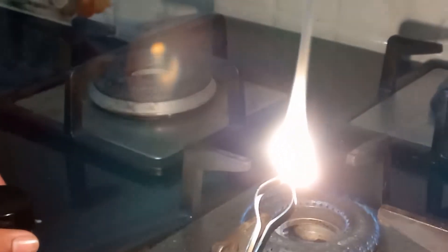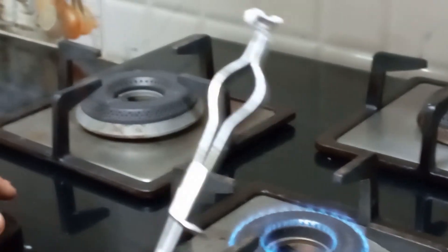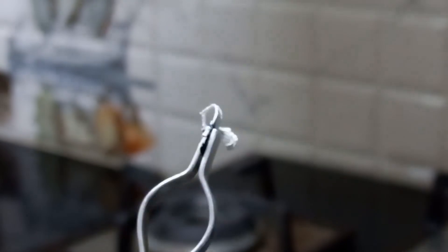You can see the magnesium ribbon burning with a white dazzling flame. So this is the remnant of the magnesium ribbon burnt. This is the magnesium oxide. You can see the magnesium ribbon reacts with the air to form magnesium oxide. Air means with the oxygen, it forms magnesium oxide.